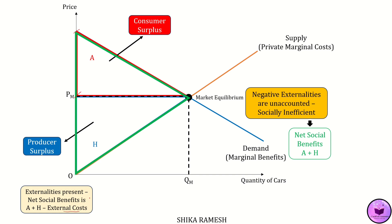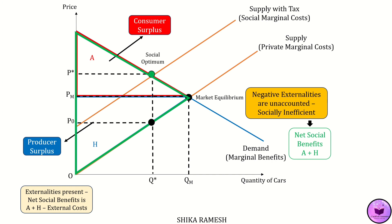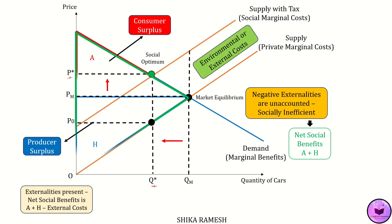When external costs are considered and internalized through taxation on the firms, the supply curve shifts upwards, forming the social marginal cost curve. It becomes the new supply curve and is based on the amount of external damage caused per automobile. The new equilibrium price is P star, which is much higher than the original price PM, and the new equilibrium quantity is Q star, which is much lower than the original quantity QM. The vertical distance between the social marginal cost and the private marginal cost is the externality damage per automobile incurred for each automobile sold till QM.